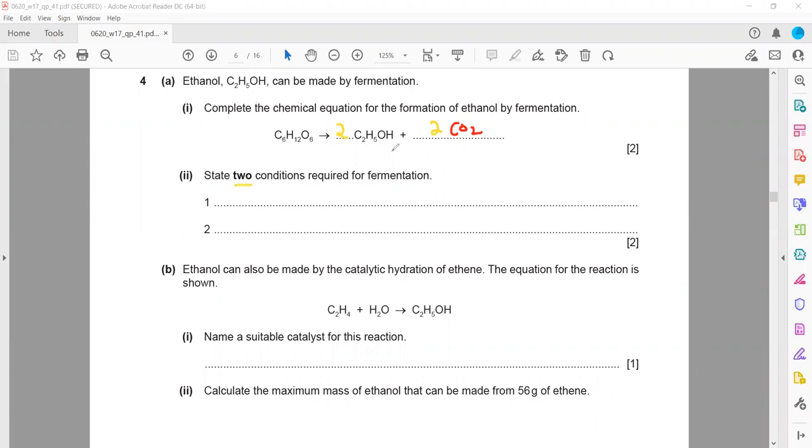State two conditions required for fermentation. It's around 35 to 37 degrees centigrade and anaerobic condition, absence of oxygen, and in the presence of yeast. An aqueous glucose should be a solution. You can mention yeast and temperature around 37 degrees centigrade or absence of oxygen and anaerobic condition.